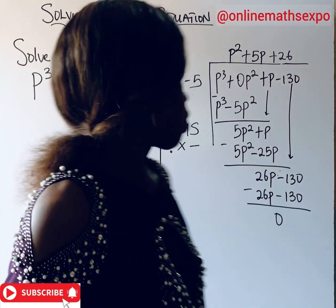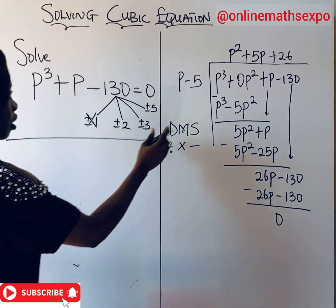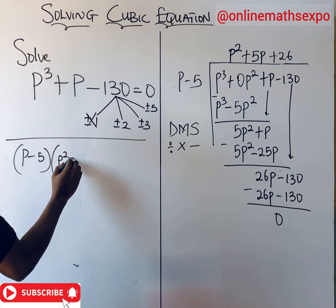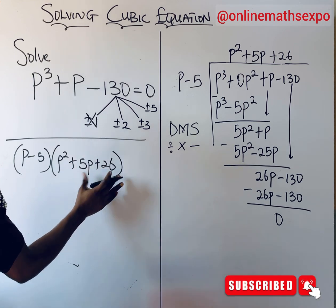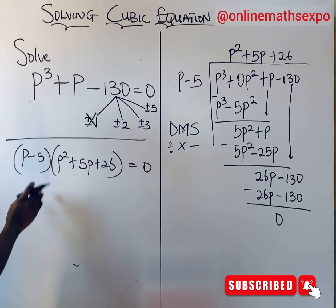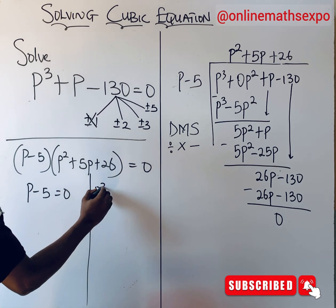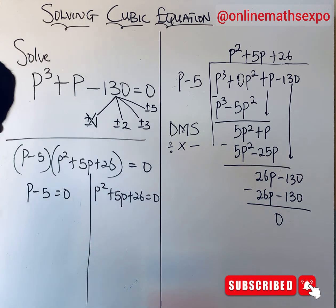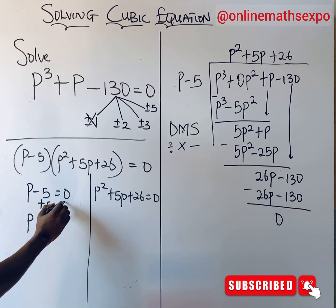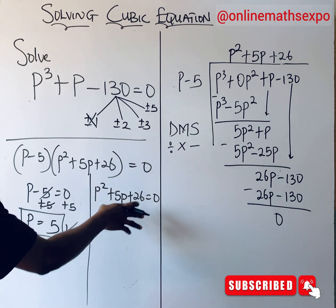The remainder is zero, confirming that (p − 5) is indeed a factor. The quotient we obtained is p² + 5p + 26. So the original expression equals (p − 5)(p² + 5p + 26) = 0. This means either p − 5 = 0 or p² + 5p + 26 = 0. From the first factor, adding 5 to both sides gives p = 5.